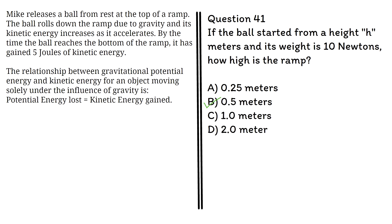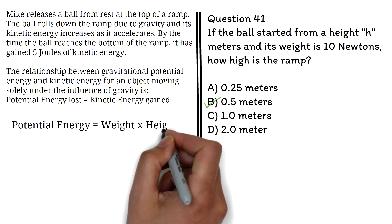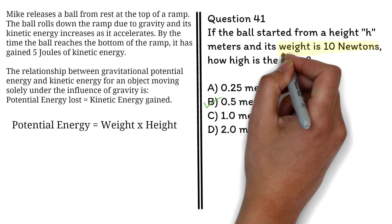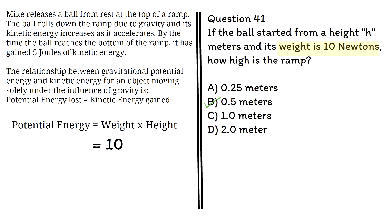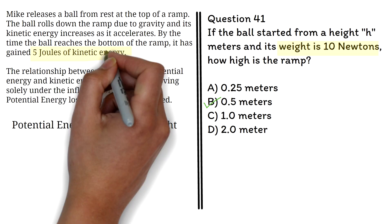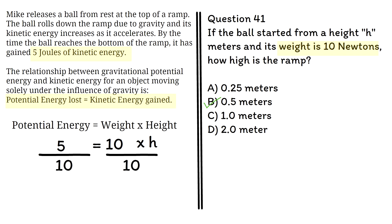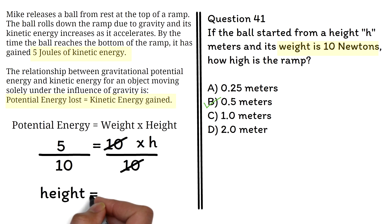For questions in this section, all the formulas will be given to you, but you'll have to understand the relationship of the information in order to solve. The potential energy due to gravity is given by the formula: weight times height. To find the height, we need to know the weight and the potential energy. The weight is 10 newtons. The potential energy equals the kinetic energy gained, which is 5 joules. So we have 5 equals 10 times h. Dividing both sides by 10, we get h equals 0.5 meters.